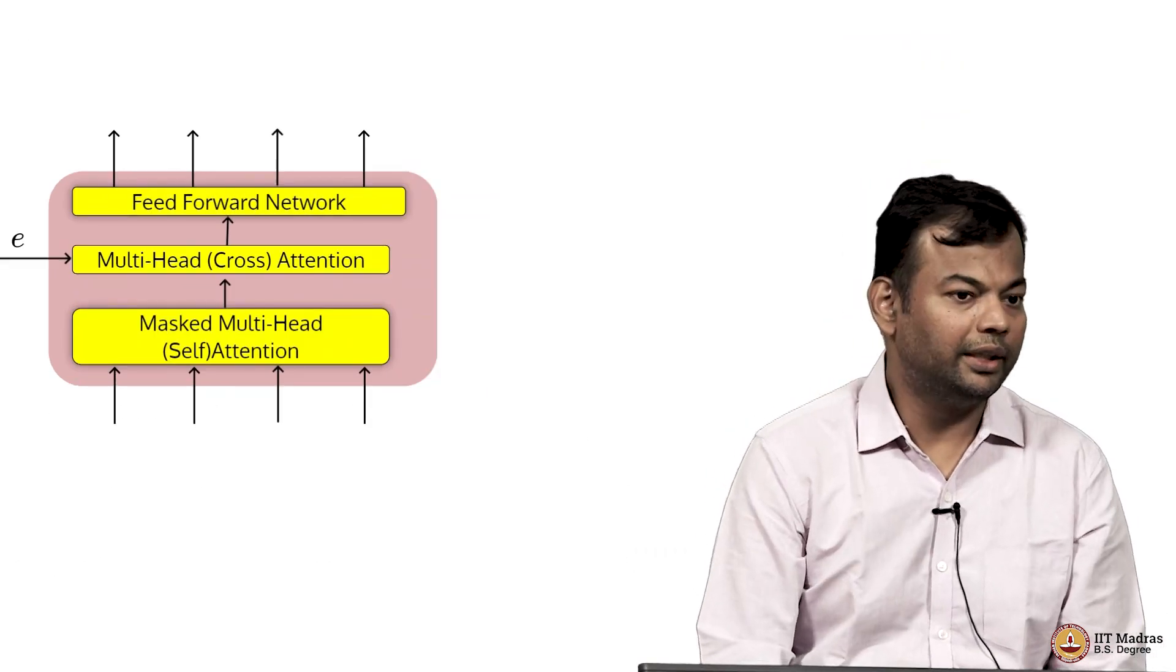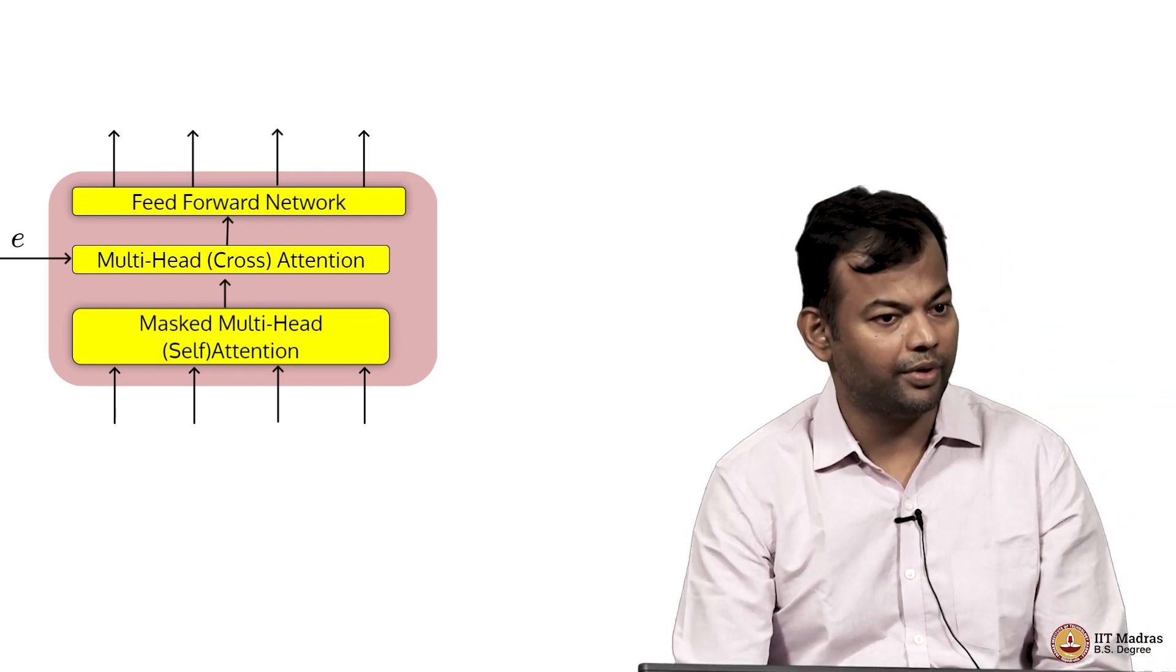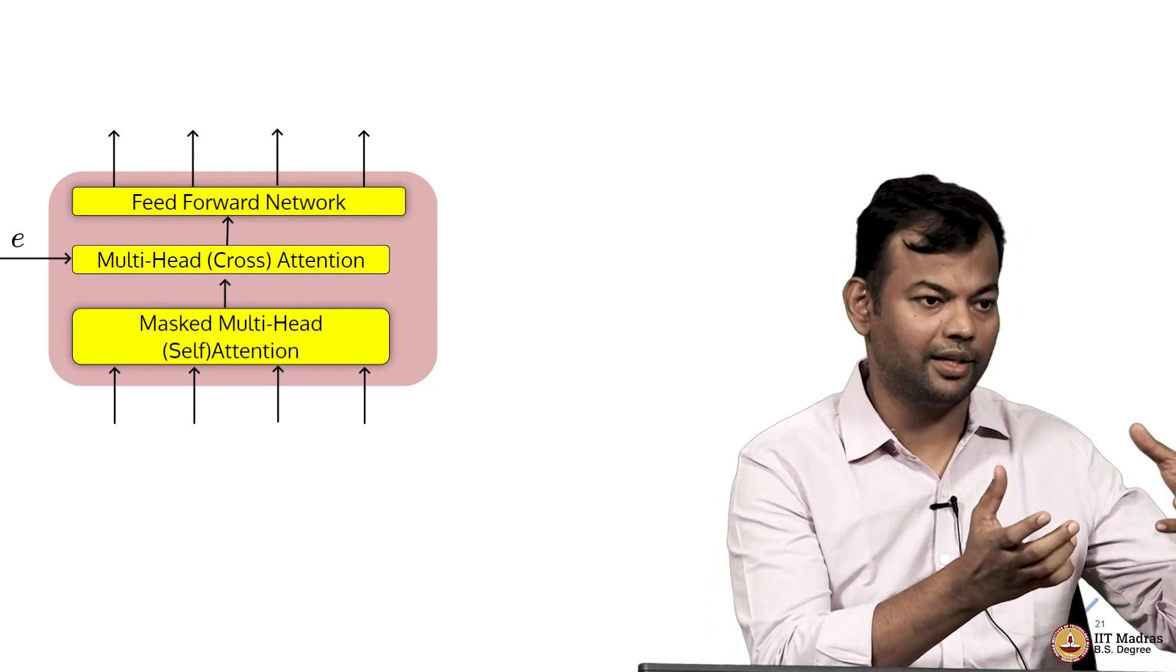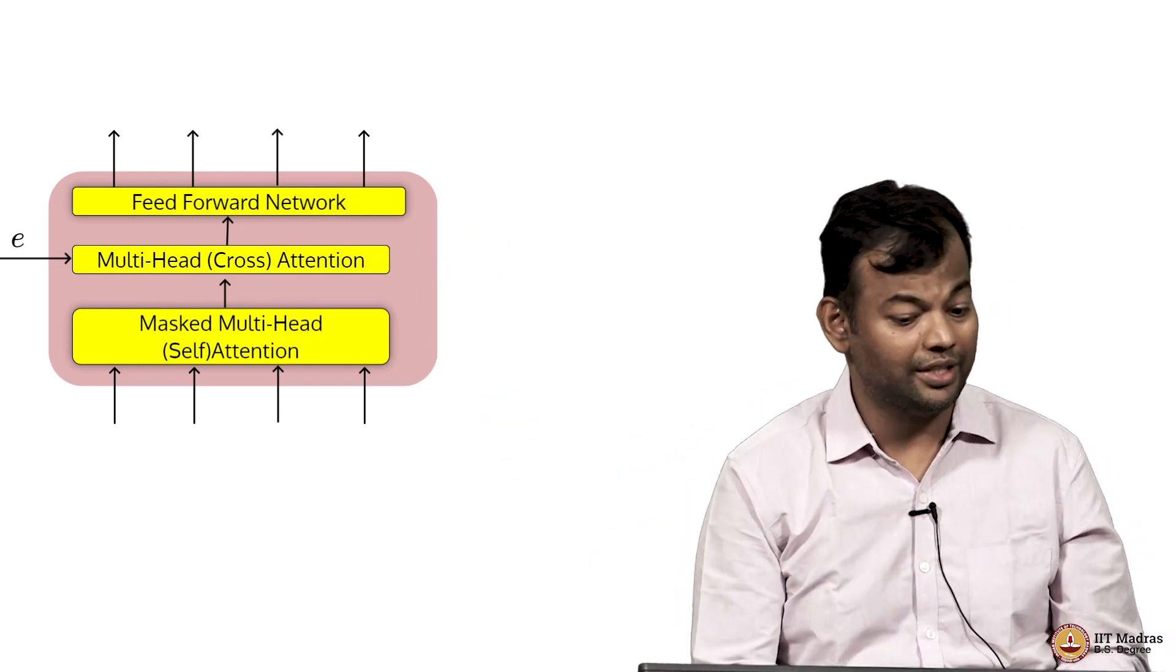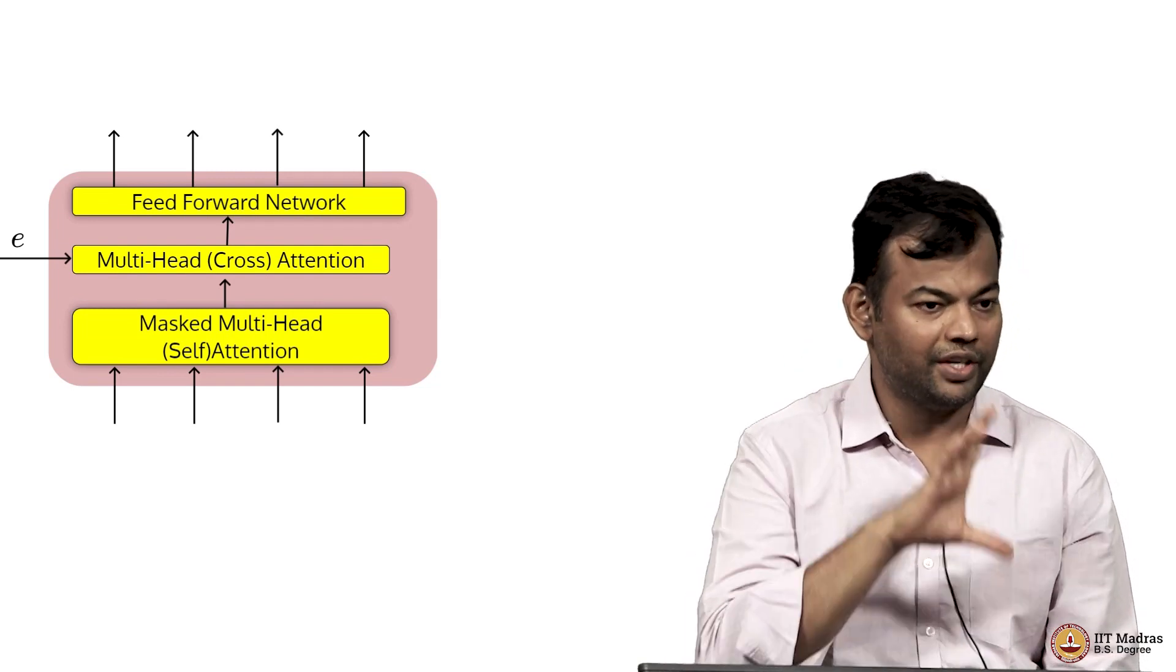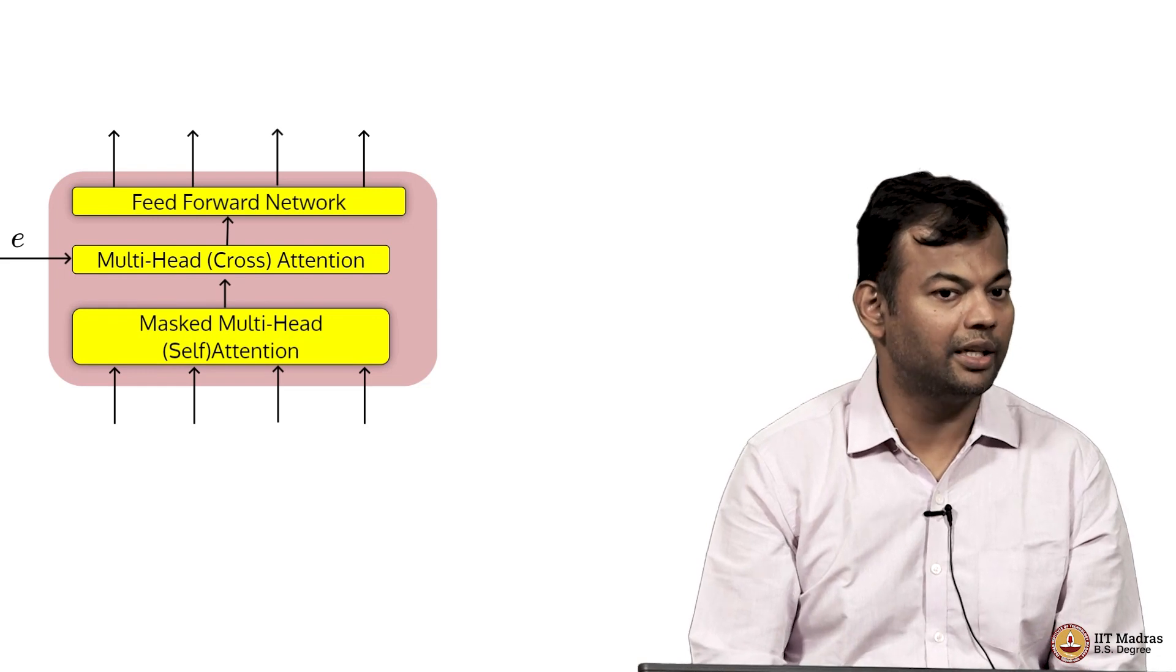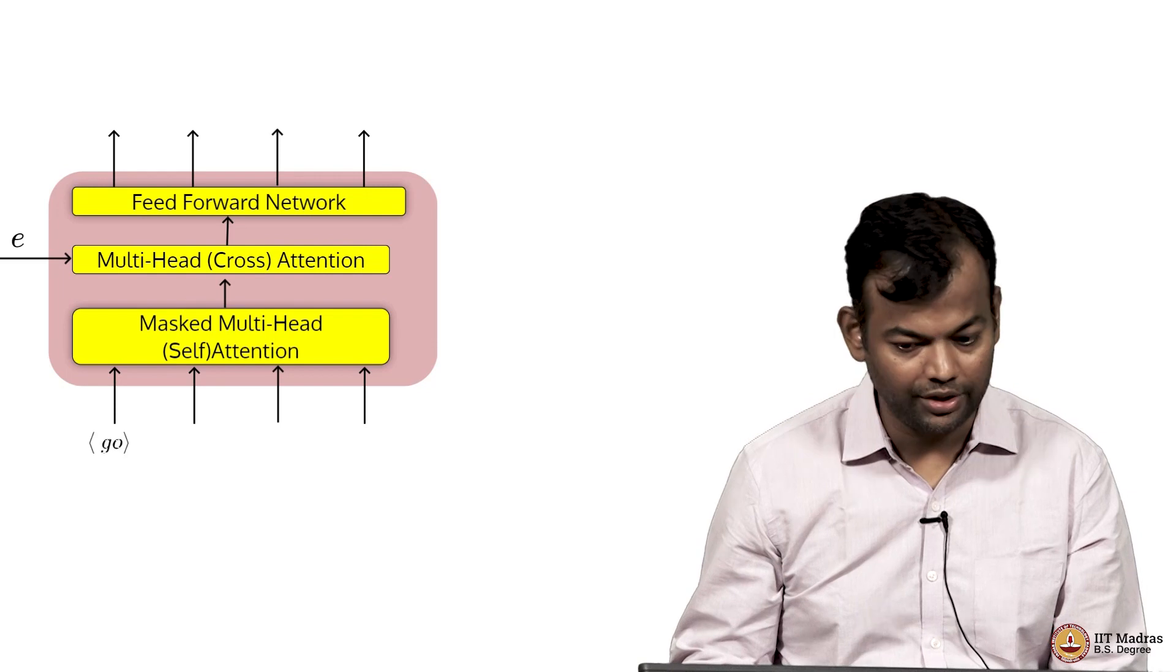So this is what the decoder of our vanilla transformer model which was used for translation. It had an encoder to encode the English sentence and then it had a decoder to decode the Hindi translation. So this is the decoder part of it. If you remember, it had the self attention, cross attention and feed forward network. So I have just taken that diagram as it is and now let us see if we have to make any changes to make it work for the task at hand.